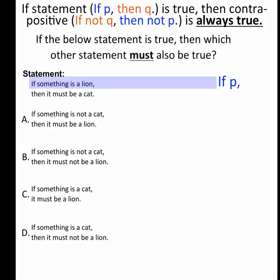So my statement says, if something is a lion, then it must be a cat. So if something is a lion, if-p, then it must be a cat, then-q.